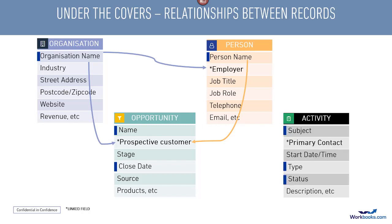The final record that I'm going to look at in this tutorial is an activity record. It can be a task such as a phone call or a to-do of some sort, or it can be a meeting. Either way, it's going to include information on the type of activity, the due date, the completed date, the status — how far through that have you got, is it brand new, is it in progress, is it complete? And also the name of the person, the primary contact that you're dealing with. The primary contact field is what we call a linked field and it can only be populated with the name of a person who's already on your database.